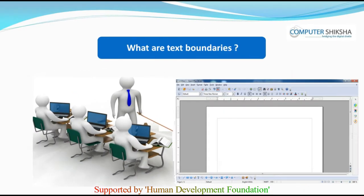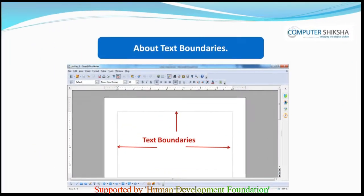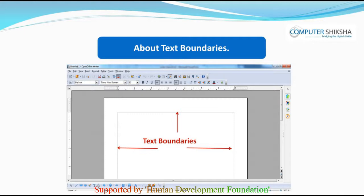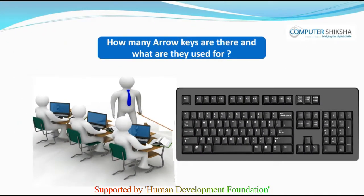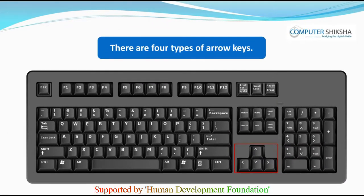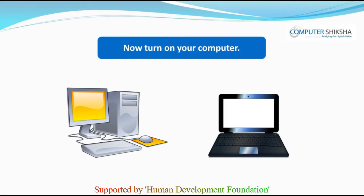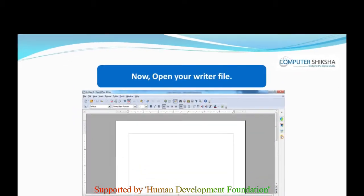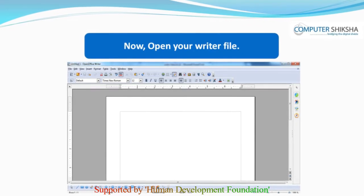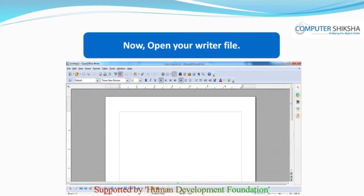What are text boundaries? The text boundaries help us in typing the text within the writer page. How many arrow keys are there and what are they used for? Arrow keys are of four kinds and we use these to move our cursor from one place to another on the writer page. Go ahead now and switch on your computer and open the writer file. If you have any problems in opening the writer file, watch the video carefully and learn how to do it.